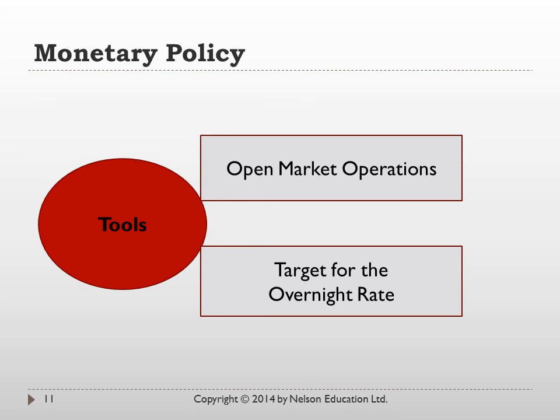By raising the overnight rate, interest rates in the economy go up. This decreases the money supply because people will tend to want to save money more when interest rates are higher, rather than spend. This reduces the amount of money in the money supply, slows down the economy, and takes some of the upward pressure on price increases out of the economy.